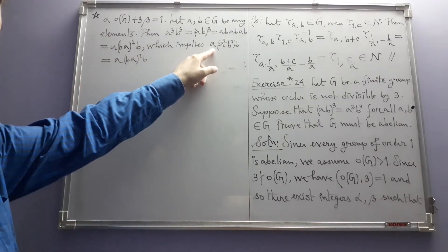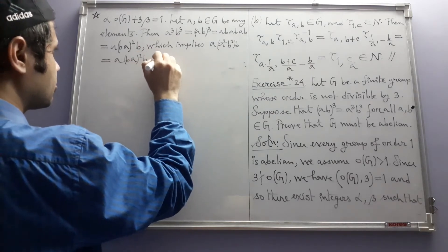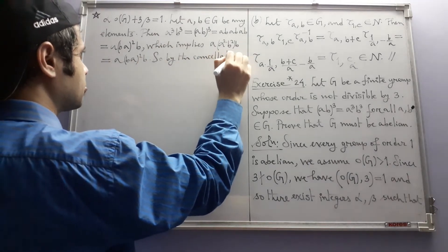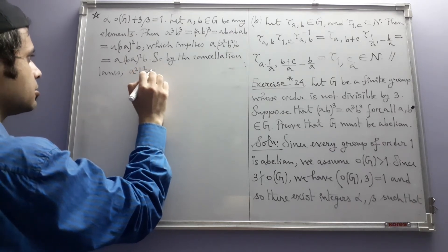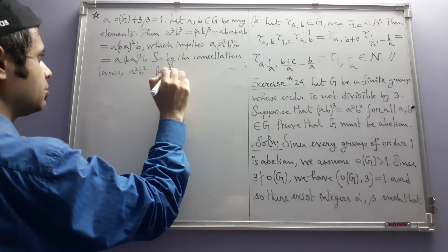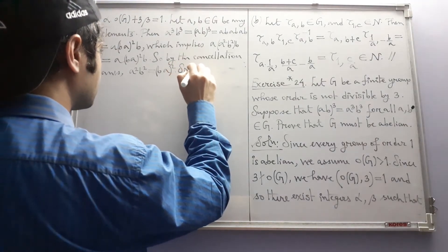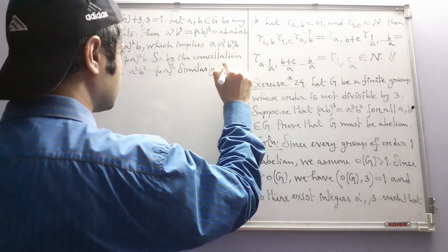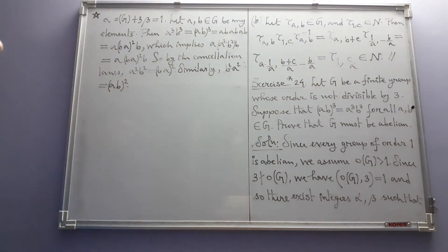We can cancel A from both sides using the left cancellation law and cancel B from both sides using the right cancellation law. So by the cancellation law, A²B² = (BA)². Similarly, B²A² = (AB)² because A and B are arbitrary, so we can interchange them.